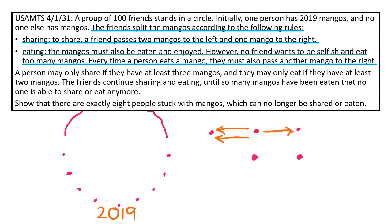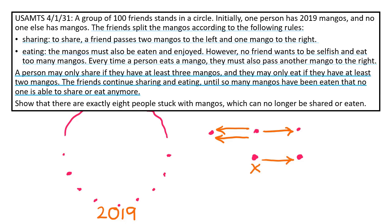Eating. The mangoes must also be eaten and enjoyed. However, no friend wants to be selfish and eat too many mangoes. Every time a person eats a mango, they must also pass another mango to the right. A person may only share if they have at least three mangoes and they may only eat if they have at least two mangoes. The friends continue sharing and eating until so many mangoes have been eaten that no one is able to share or eat anymore.